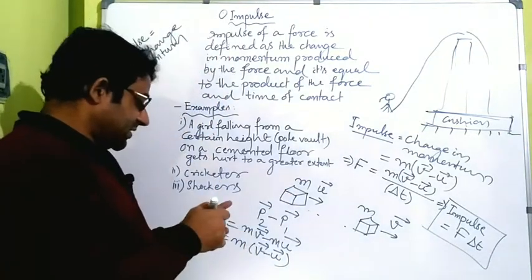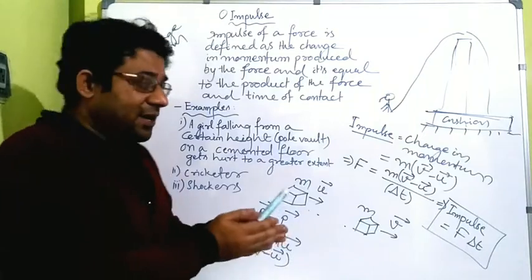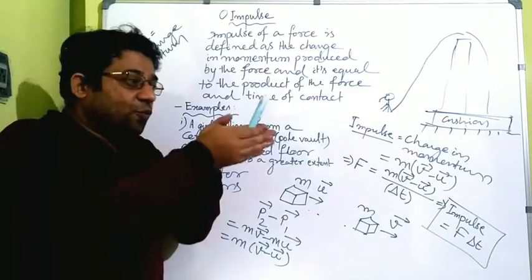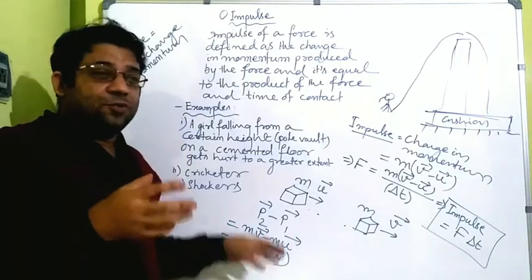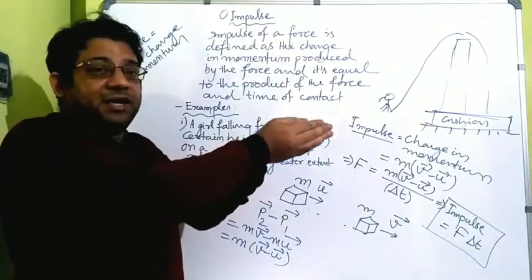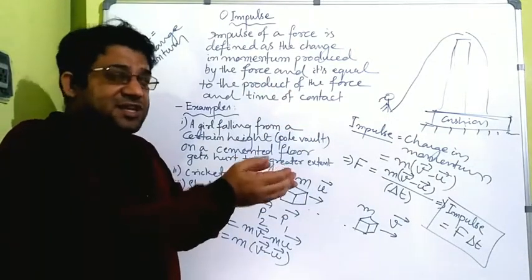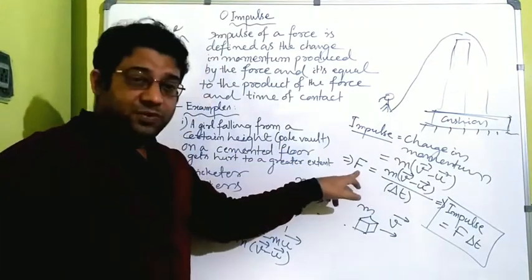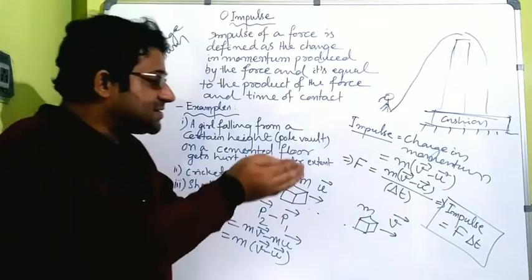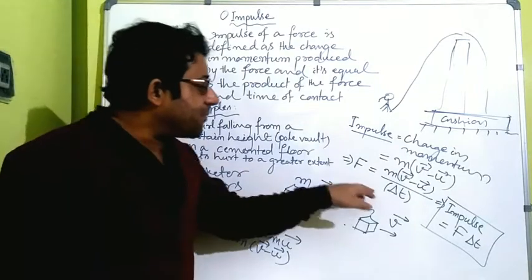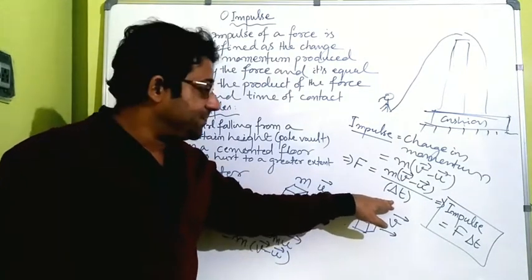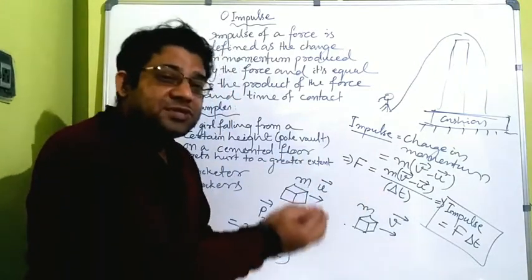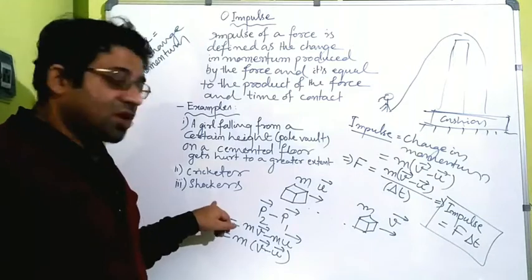Similarly, when a cricket fielder takes a catch, you might have seen that whenever the ball is coming from a great height, the fielder takes his hands a little down. Why? A novice who is new doesn't know this trick and tries to catch the ball immediately. By doing so, the momentum changes suddenly — the ball was coming at tremendous speed and you try to hold it then and there, so delta t is very small and force will be very high, hurting the hands. Instead, if the hands are taken back, the time of contact increases and the change of momentum takes place over a greater time, so force decreases.